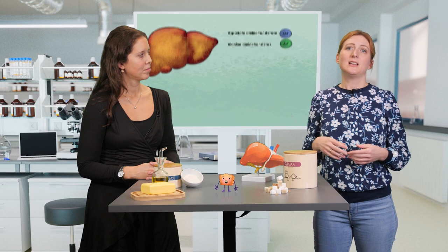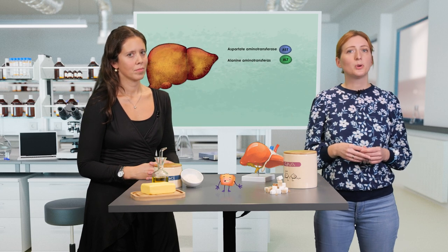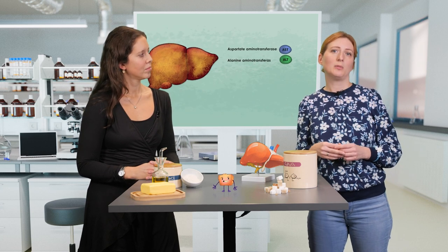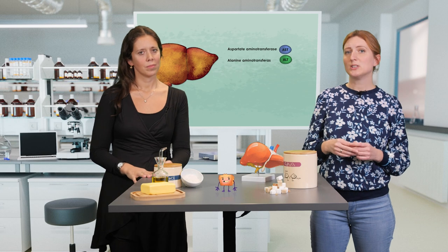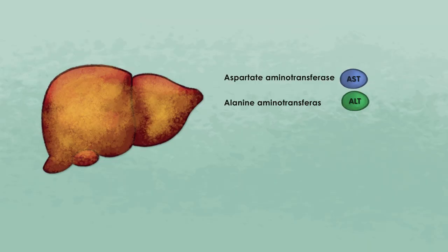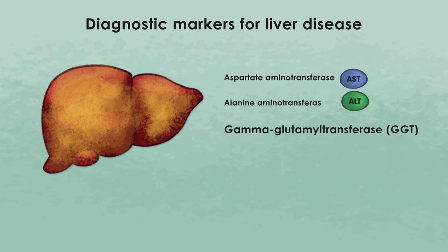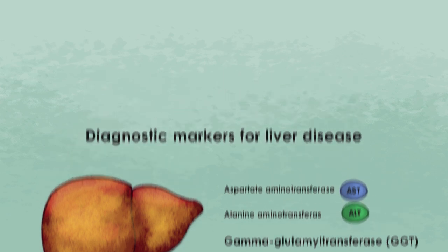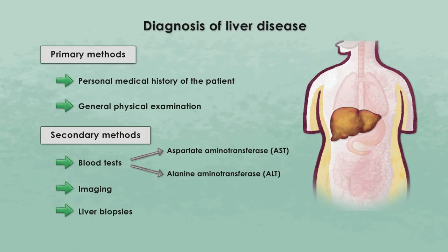Besides ALT and AST, there are also other proteins that are commonly checked in the blood for the diagnosis of liver disease. Some examples are gamma-GT or the C-reactive protein, CRP. If the liver parameters in the bloodstream are not within the healthy ranges, the clinician may use specific imaging techniques.